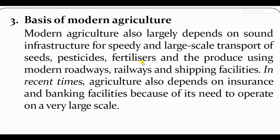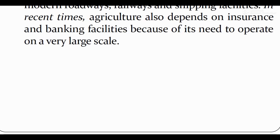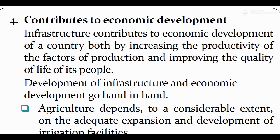Farmers को fertilizer और खाद के लिए अच्छी roads और vehicles चाहिए ताकि infrastructure अच्छा बने। Agriculture also depends on insurance and banking facilities because of its need to operate on a large scale. आज के time में लोग अपनी agricultural land की insurance कराते हैं और bank में deposits करते हैं, और loans भी लेते हैं।